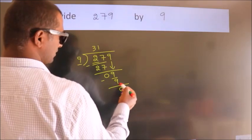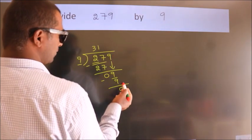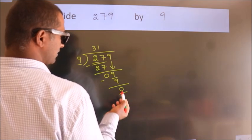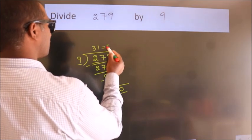After this, no more numbers to bring down. And we got remainder 0. So, this is our quotient.